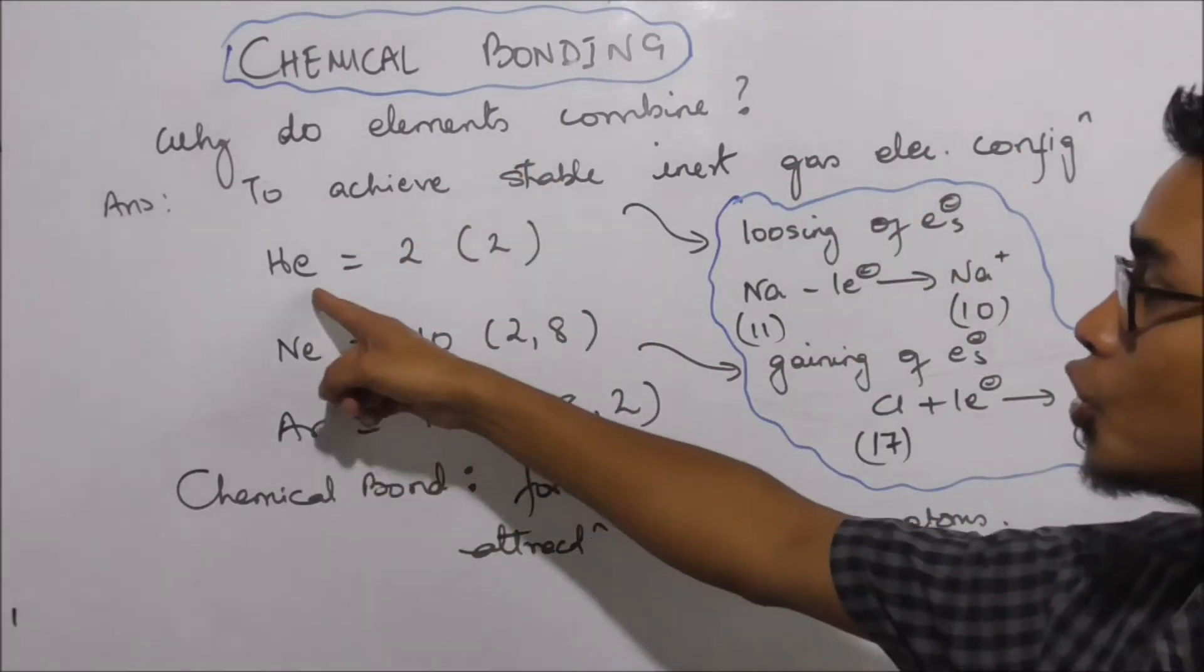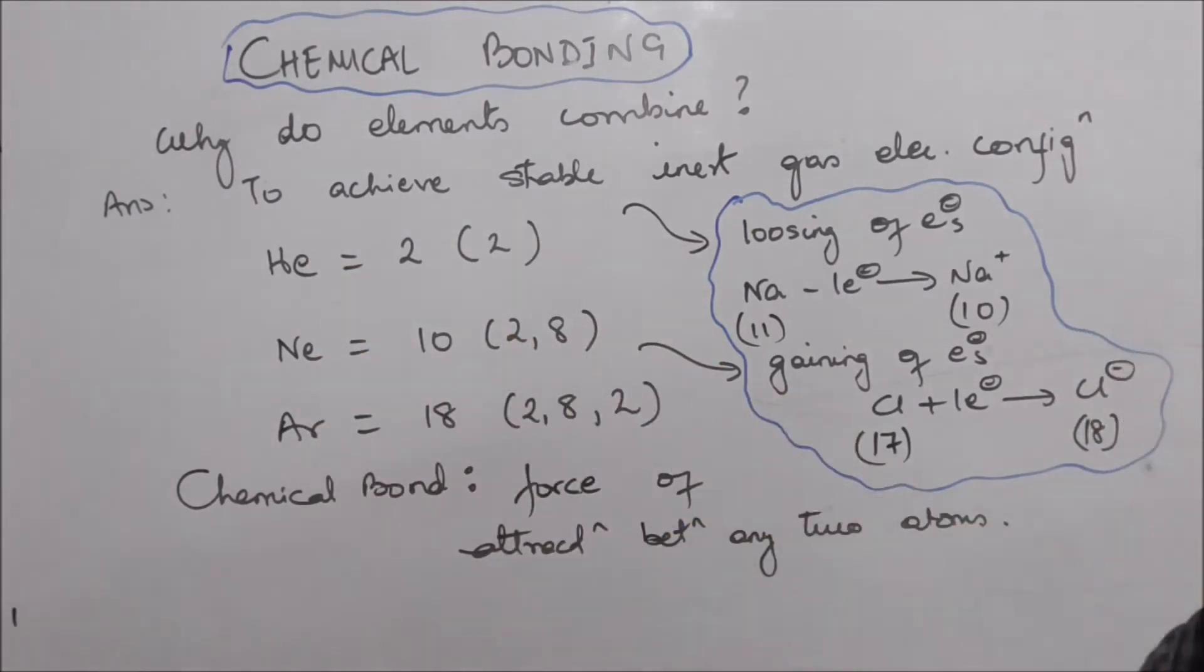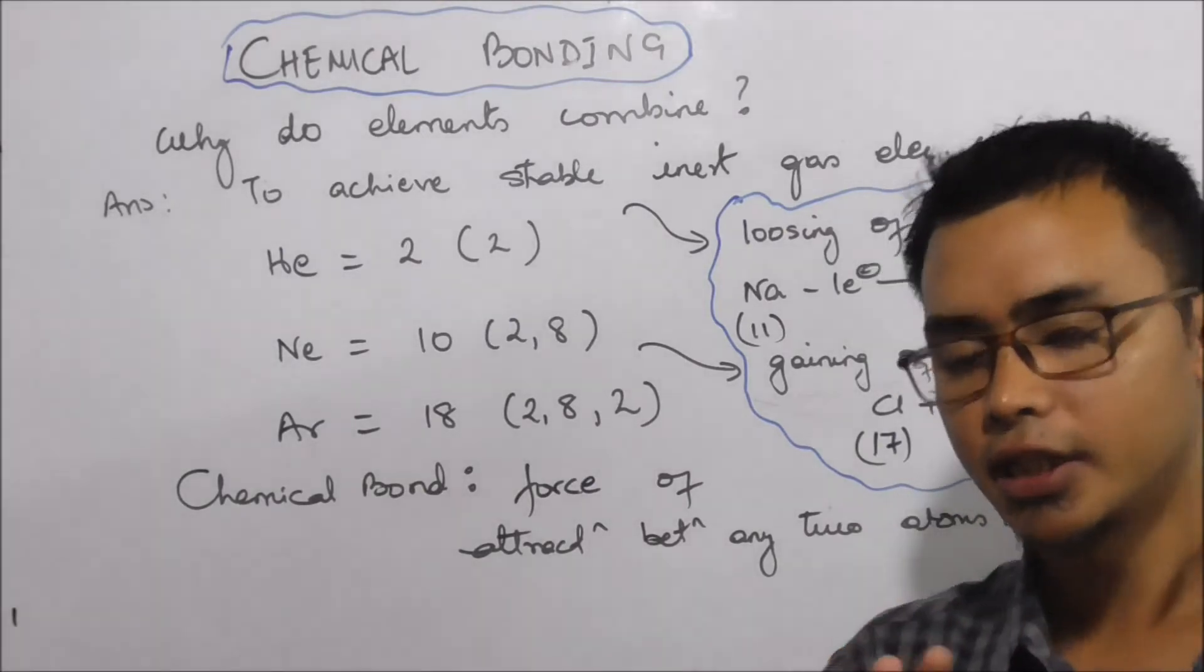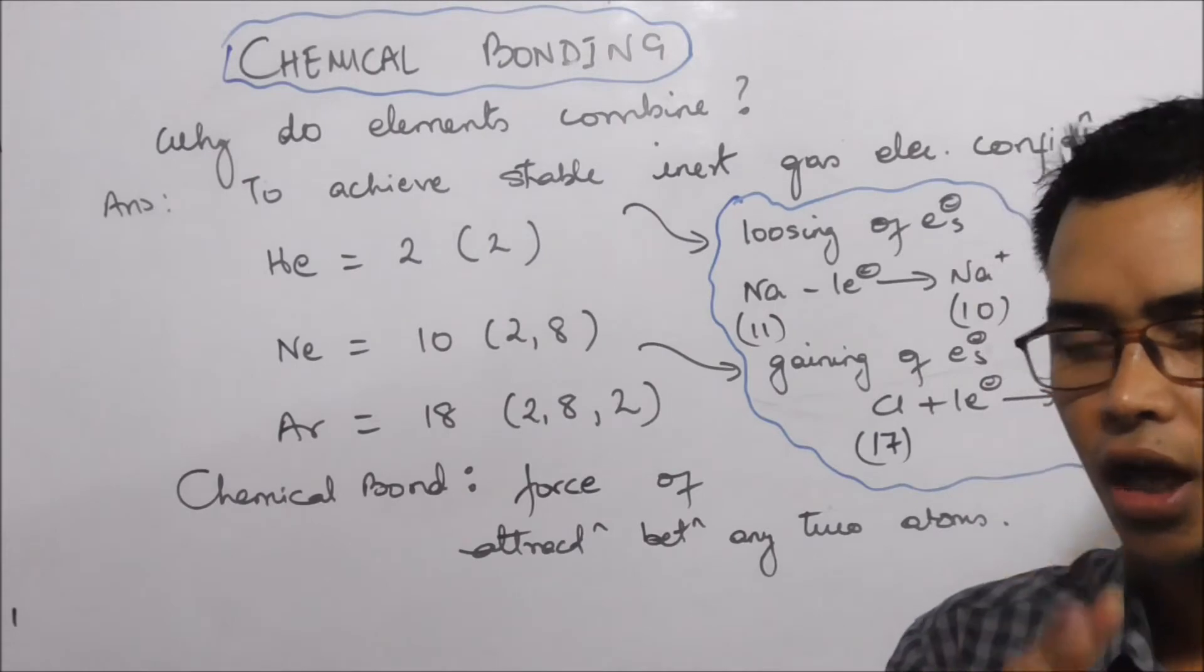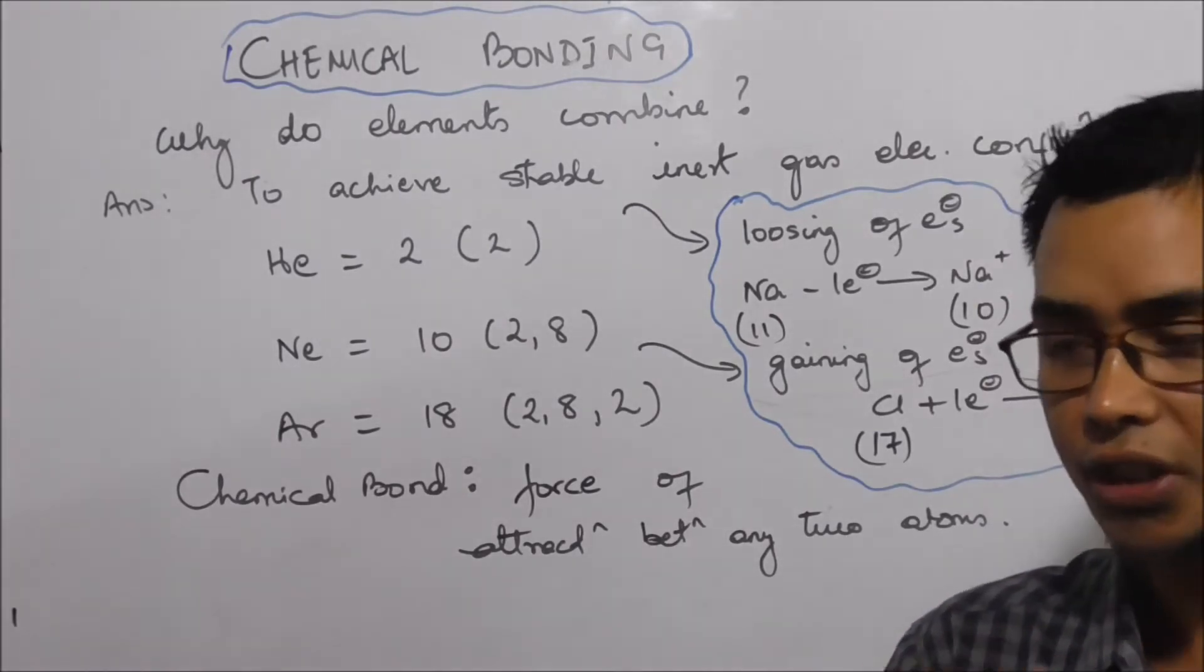Group 18 elements: Helium, Neon, Argon, Krypton. They are very stable and highly unreactive.